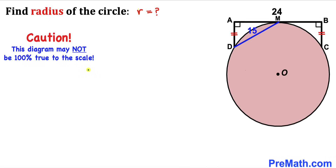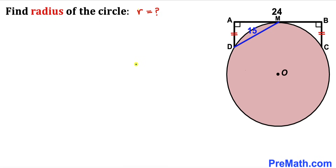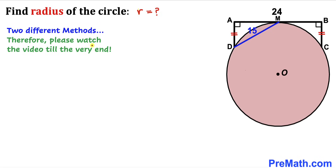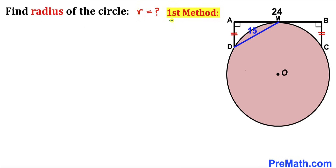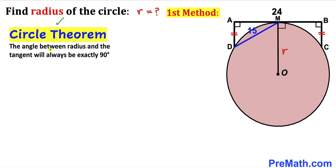Please keep in mind that this figure may not be 100% true to scale. I am going to share two different approaches, so please watch the video till the very end. Here is the first method. Let me connect center O with the point of tangency M. We can see that OM is the radius of this circle, so I'll label it lowercase r. Recalling the circle theorem: the angle between the radius and the tangent line is 90 degrees, so this angle is 90 degrees.